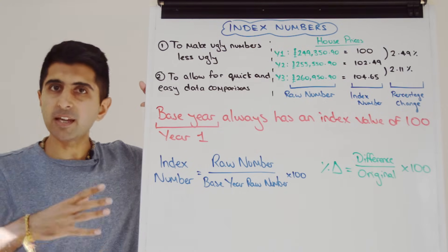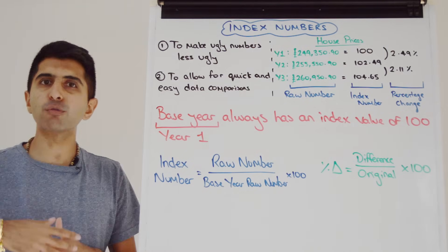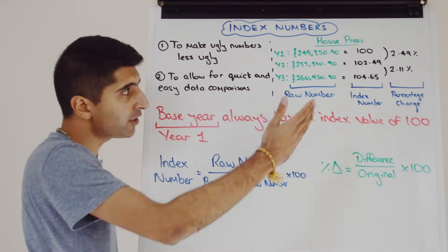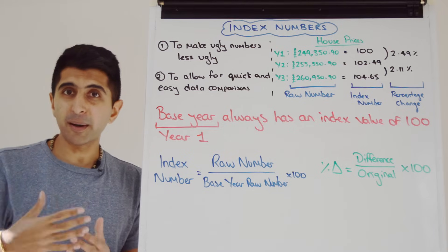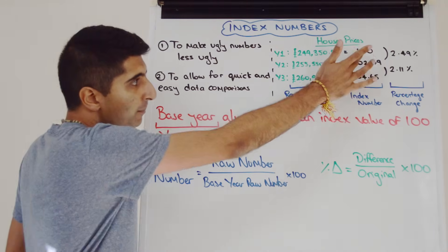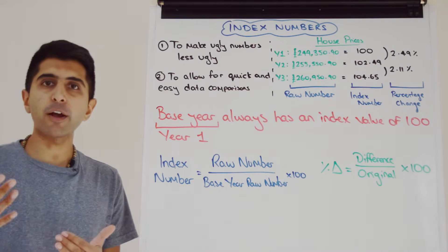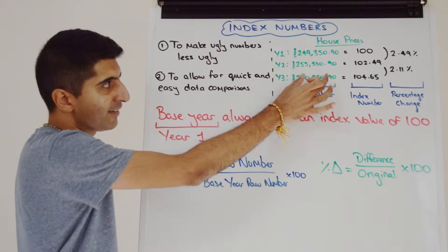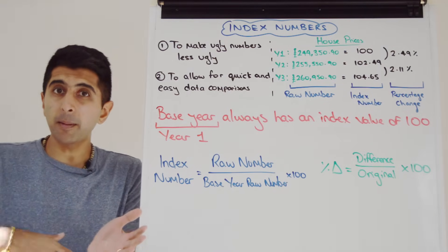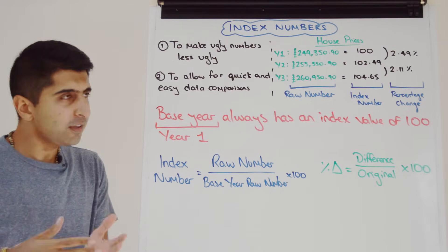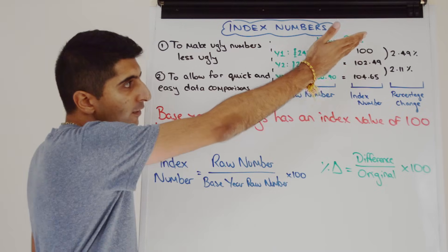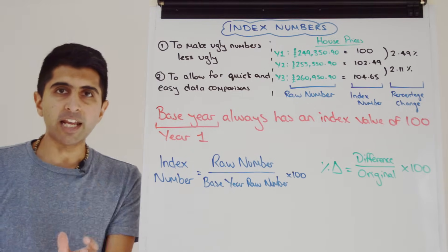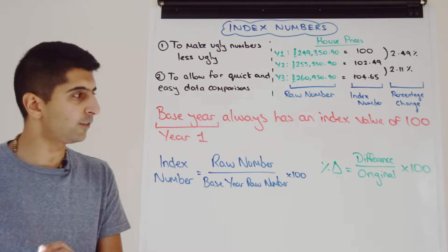As we said, we like to make comparisons between data, and often it's rates of change. We can look at percentage changes between these numbers, or more simply we can look at whether the numbers are rising. From these index numbers we can clearly see that average house prices are increasing year on year. We can see that house prices are rising just by looking at the black numbers — very simple to see. And for percentage change, we can do a very simple calculation using index numbers too.